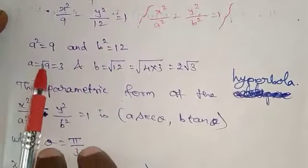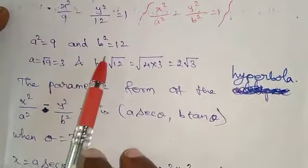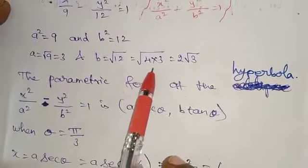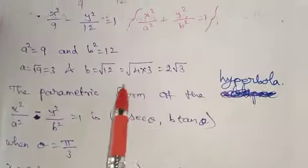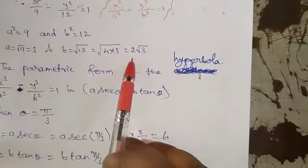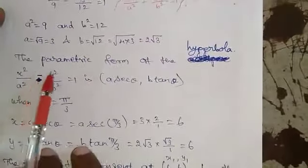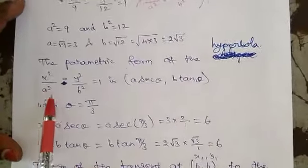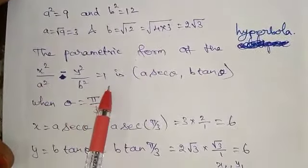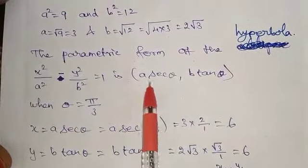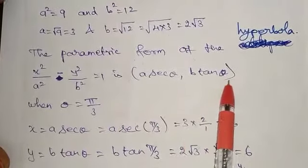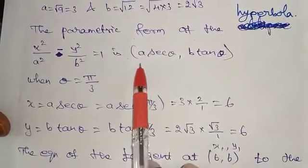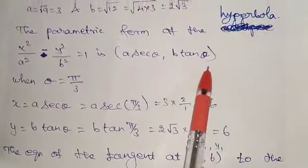Therefore a equals square root of 9, which is 3. And b equals square root of 12, which equals square root of 4 times 3, so b equals 2√3. The parametric form of the hyperbola x²/a² minus y²/b² equals 1 is (a secθ, b tanθ).